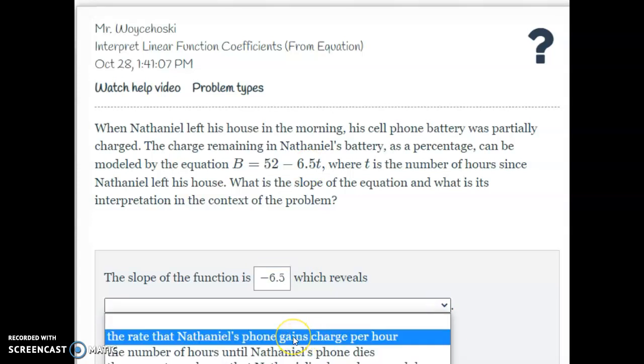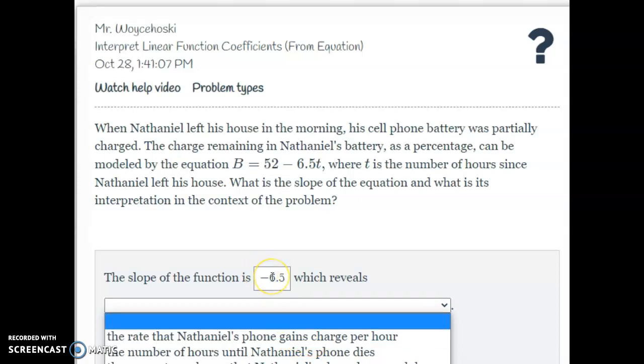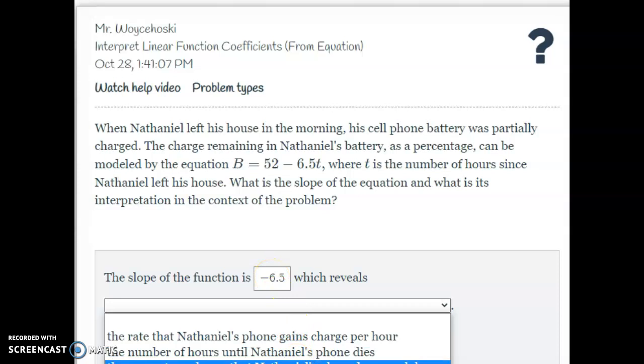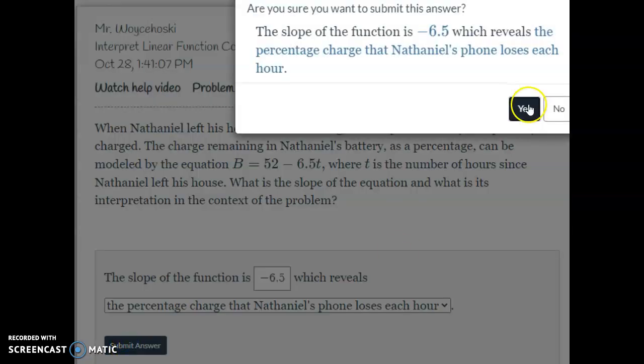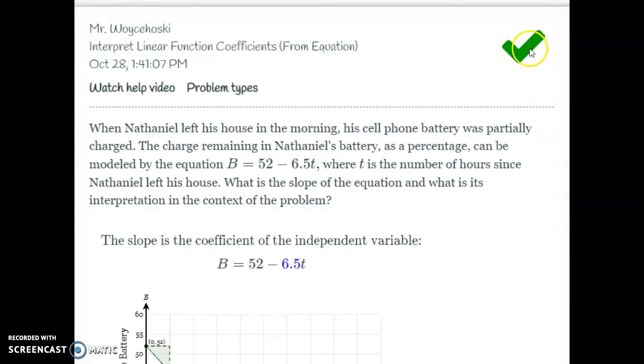So in this case it's battery charge per hour. So when I look at my choices, the rate that Nathaniel's phone gains charge per hour, well since it's negative, I'm not getting that. And I know these are cut off for you, but there's one that says the percentage charge that Nathaniel's phone loses each hour. So if it talks about slope, remember to look for the ones that talk about gaining or losing each hour or for every this or for every that or per. Because it's negative, that means we're losing it. And again, we got that one right.